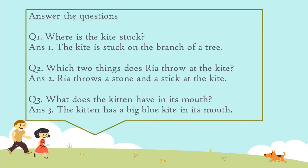Question 2: Which two things does Riya throw at the kite? When the kite is stuck on the branch of a tree, which two things does Riya throw at the kite? From the chapter, we come to know that Riya throws a stone and a stick at the kite.